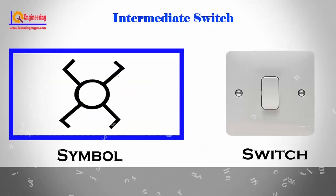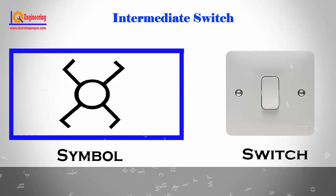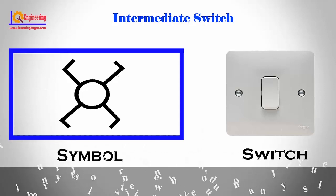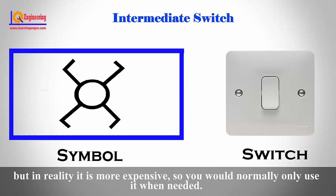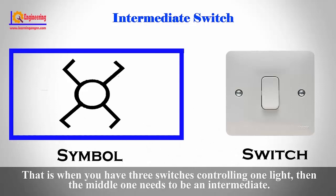Intermediate switch. An intermediate switch is where three points control the same circuit. This is a very versatile switch and can be used for most lighting situations, but in reality it is more expensive, so you would normally only use it when needed — that is when you have three switches controlling one light, where the middle one needs to be an intermediate.